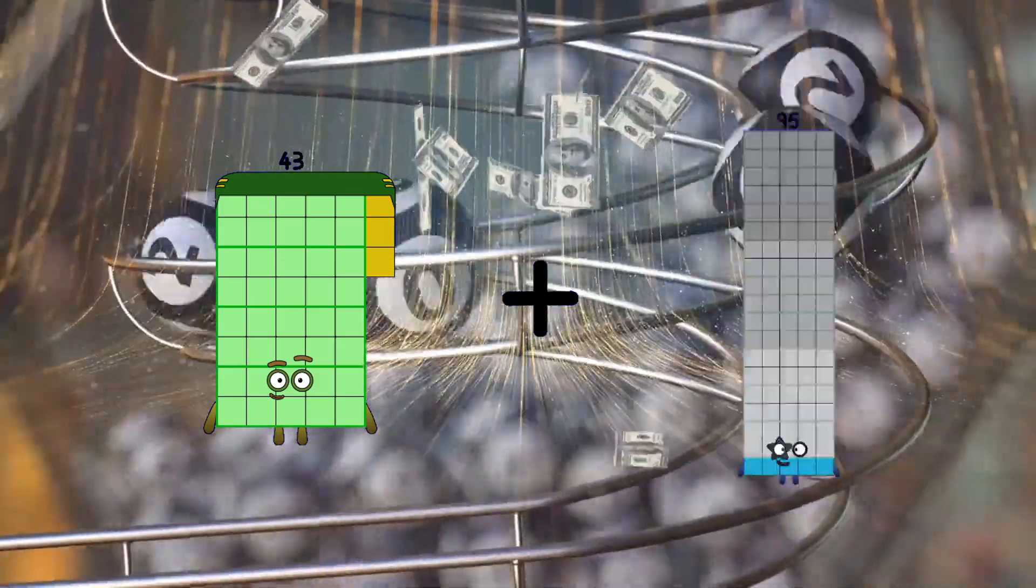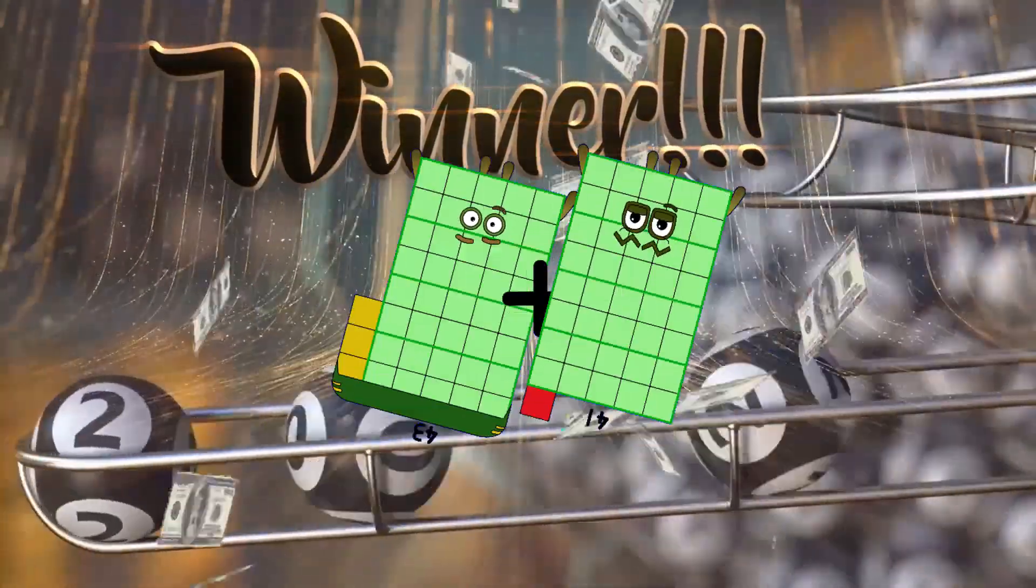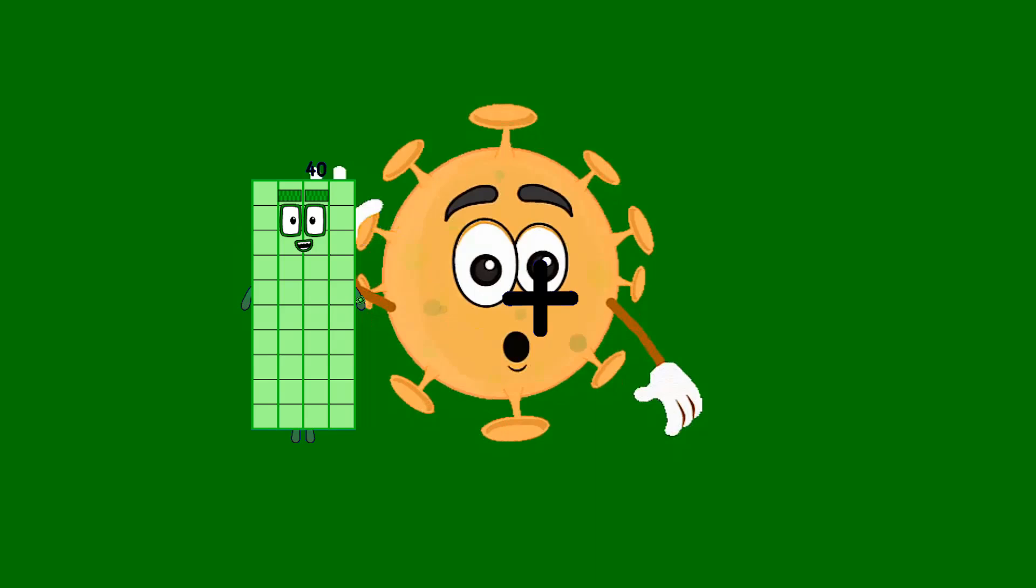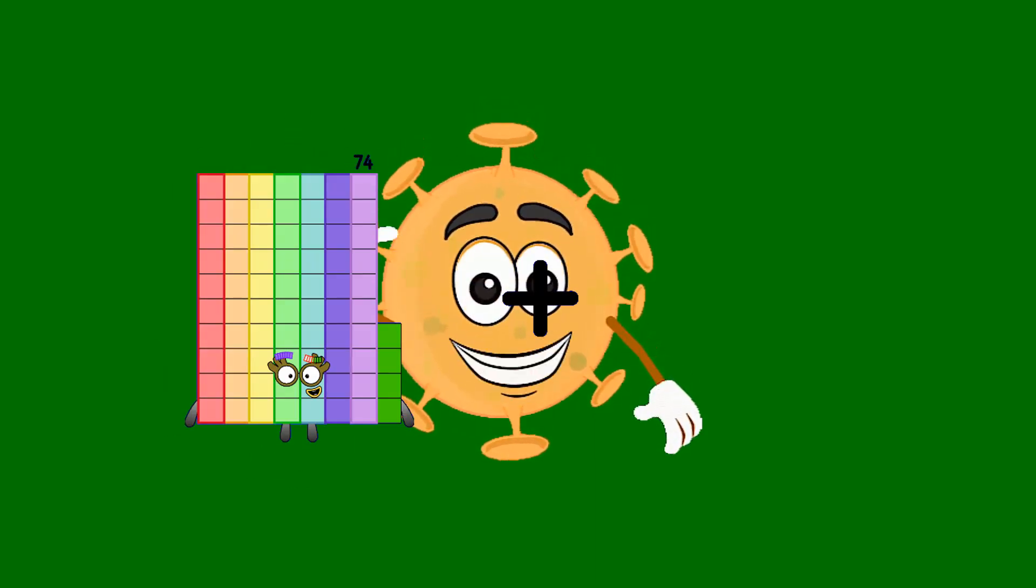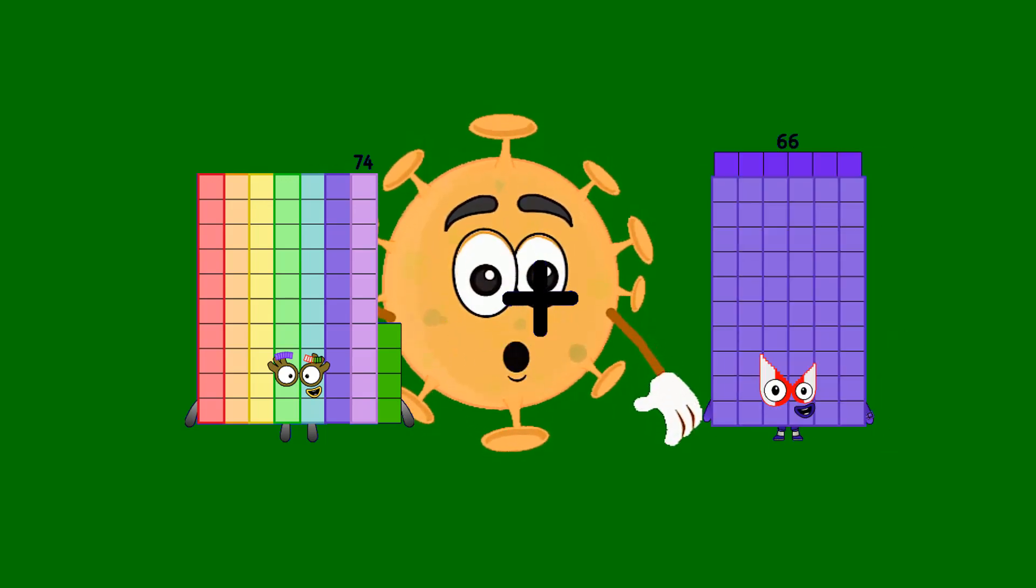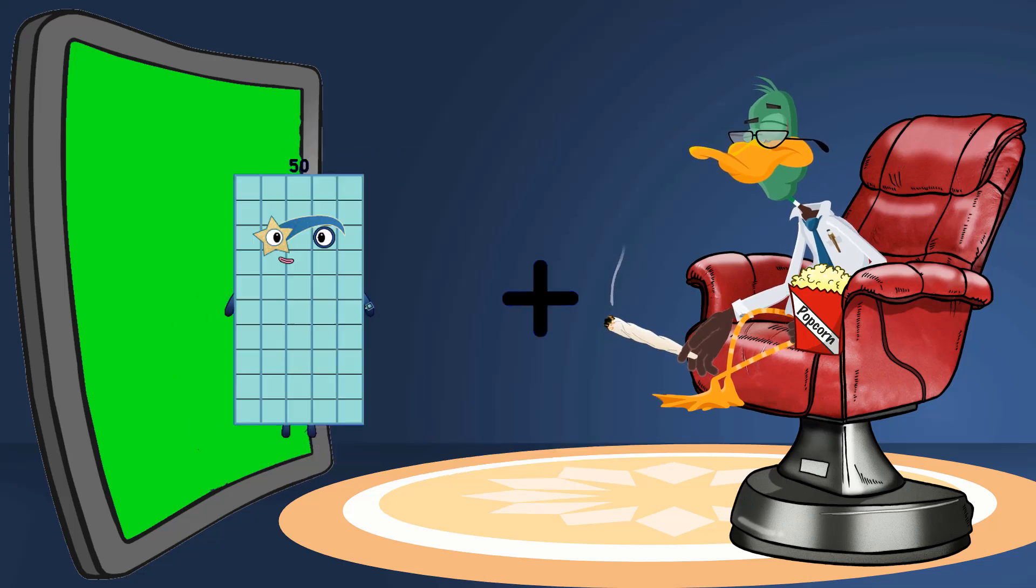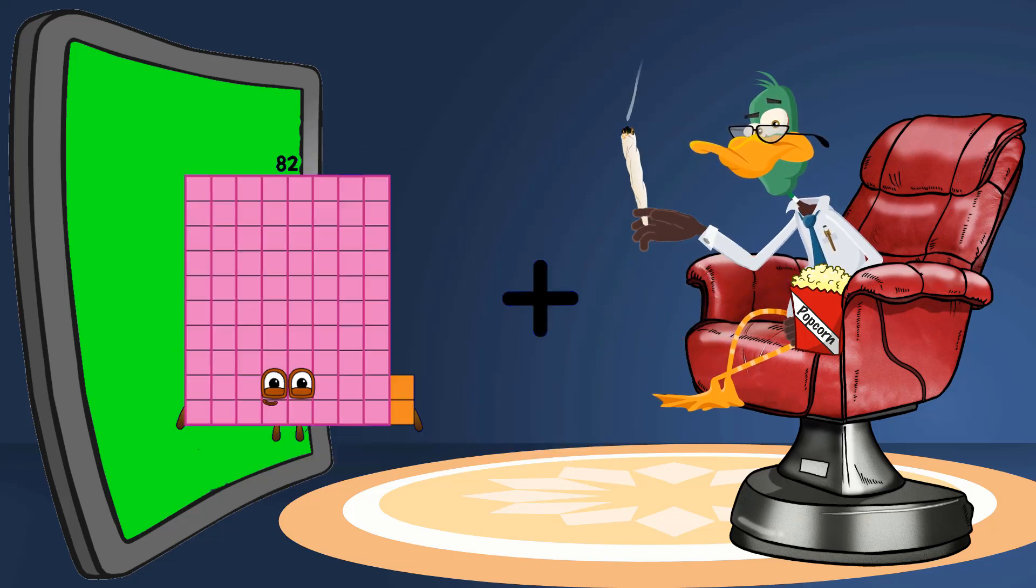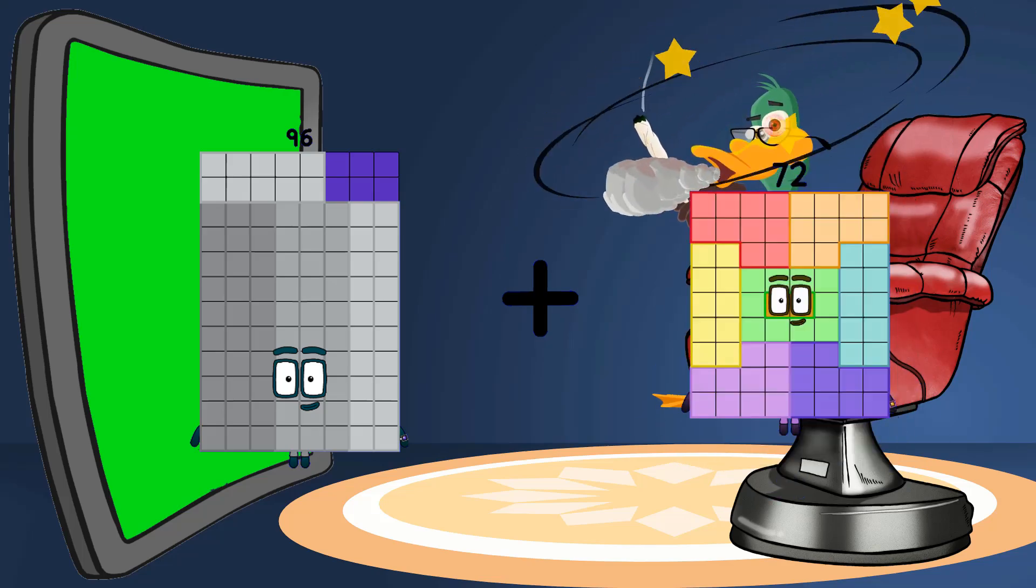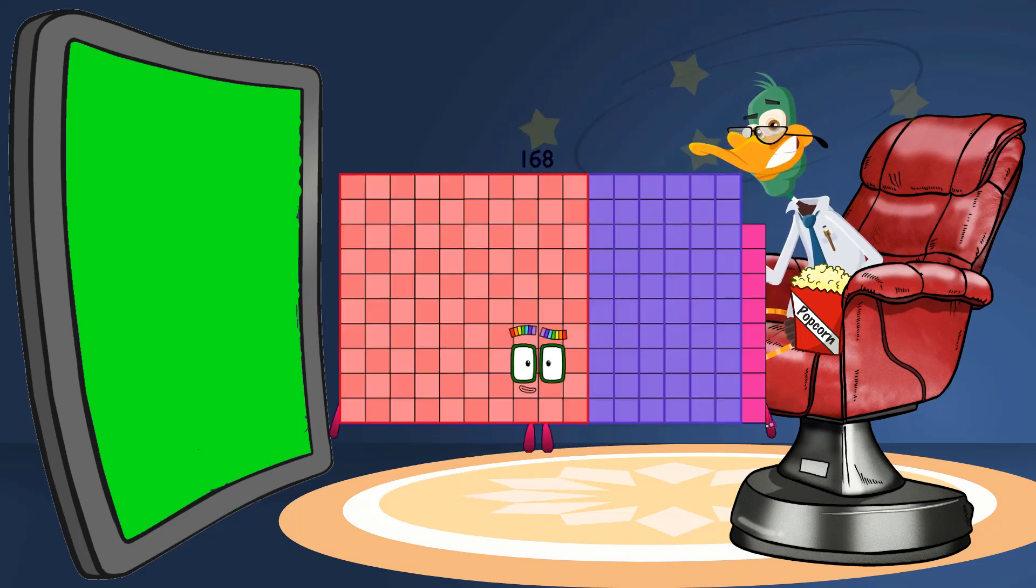74 plus 66 equals 140. 96 plus 72 equals 168. 27 plus 85 equals 112.